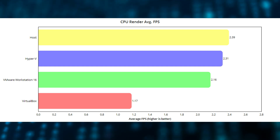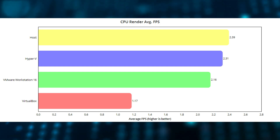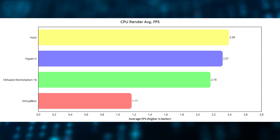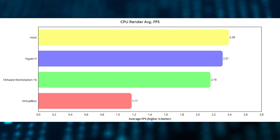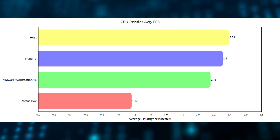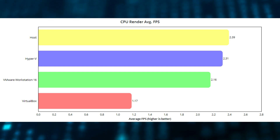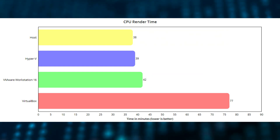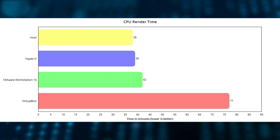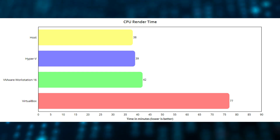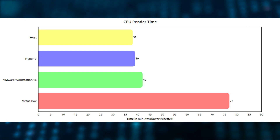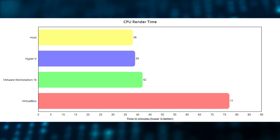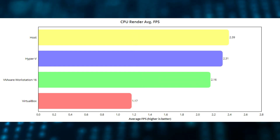While I did do all the renders on the same SSD on my computer with no background apps running, please note that this is nowhere near a scientific test — there are several variables that changed that probably shouldn't have. For starters, my host system is on Windows 10 and all the virtual machines are on Windows 11. Additionally, none of the virtual machines officially support Windows 11 yet, and VMware and VirtualBox both require modifications to allow Windows 11 to even install. Windows 11 requires TPM support and secure boot support, but VMware Free does not have TPM support, and VirtualBox does not have TPM support or official secure boot support.